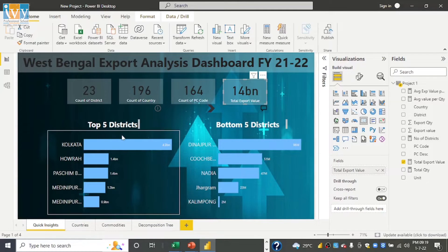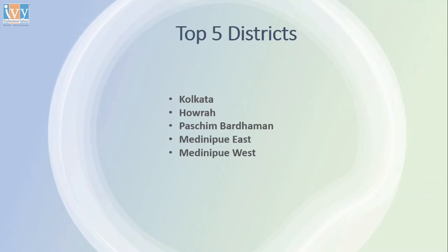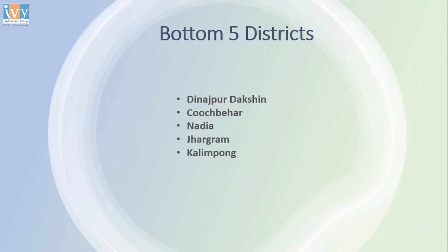Next, we have the top 5 districts and bottom 5 districts in terms of export value. The top 5 districts are Kolkata — the capital of West Bengal — then Haora, which is very adjacent to Kolkata, then Paschim Stream and Purba Medinipur, and two of the Medinipur districts, East and West. The bottom ones are Dinajpur, Uttar Dinajpur, Purba Dinajpur, Nadia, Jhargram, and Kalimpong. These are further away from the port area, which may be a reason these districts have lower export value.